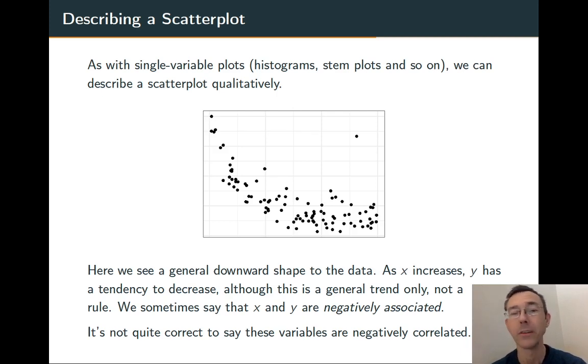We say these two variables are negatively associated in a situation like that. Now, you're going to be tempted to say there's a negative correlation here. You should resist that temptation. We want to hold that word back, correlation, for the situation where the association is linear. That is to say that the graph has a shape like a straight line. That's not the case here.